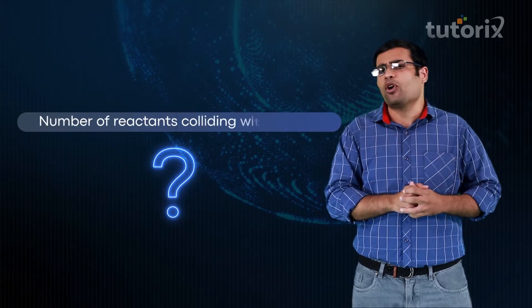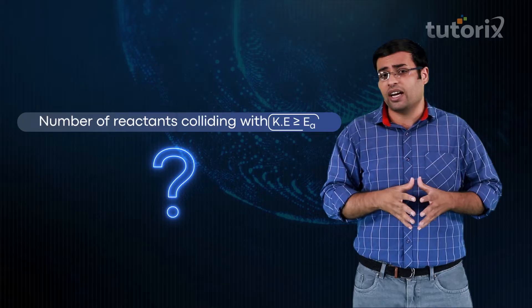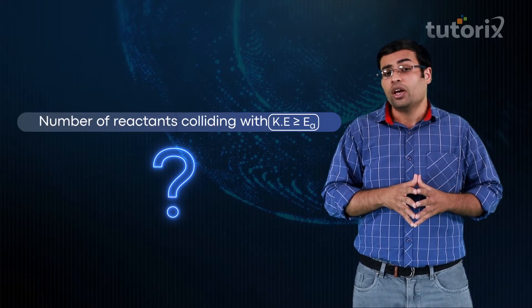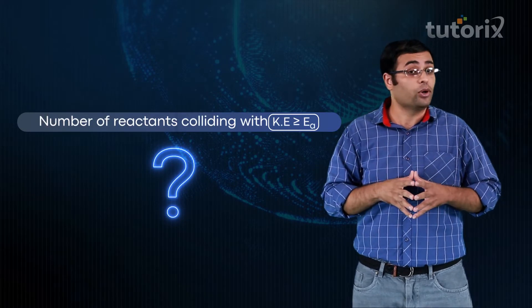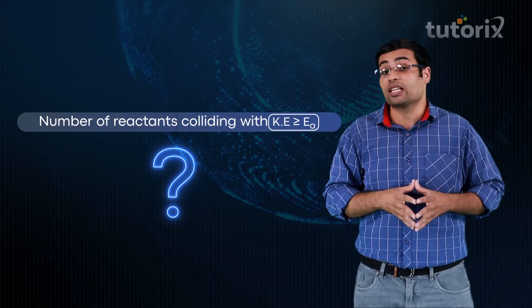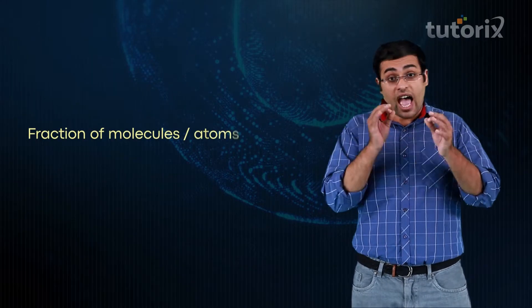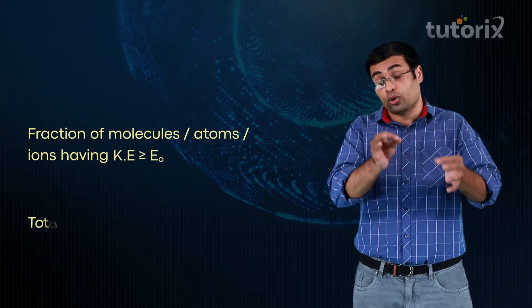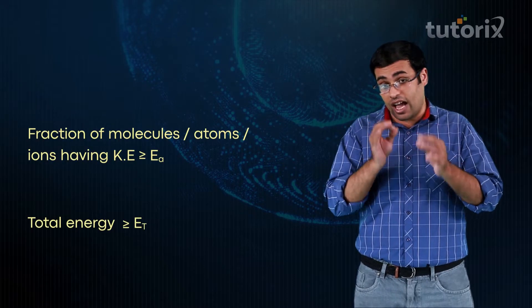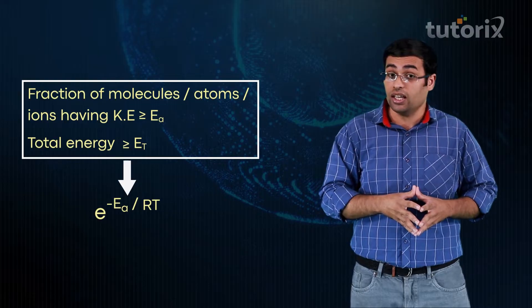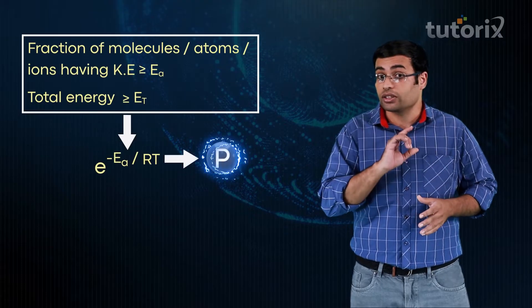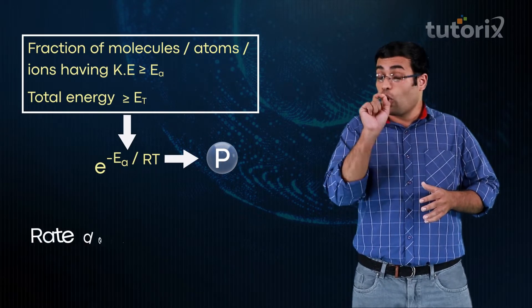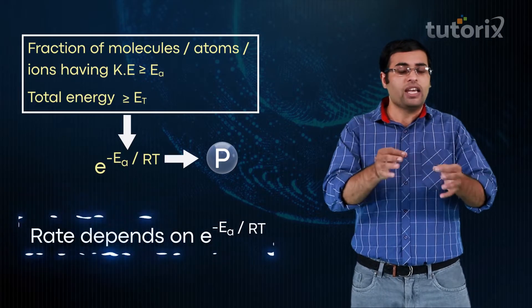How do we find the number of molecules, atoms, or ions having kinetic energy greater than or equal to Ea? We have learned in a previous class that the fraction of atoms, ions, or molecules having kinetic energy greater than or equal to Ea — or total energy greater than or equal to Et — is given as e raised to the power minus Ea by RT. Only this fraction of molecules will lead to the formation of products. Therefore, rate also depends upon e^(−Ea/RT).